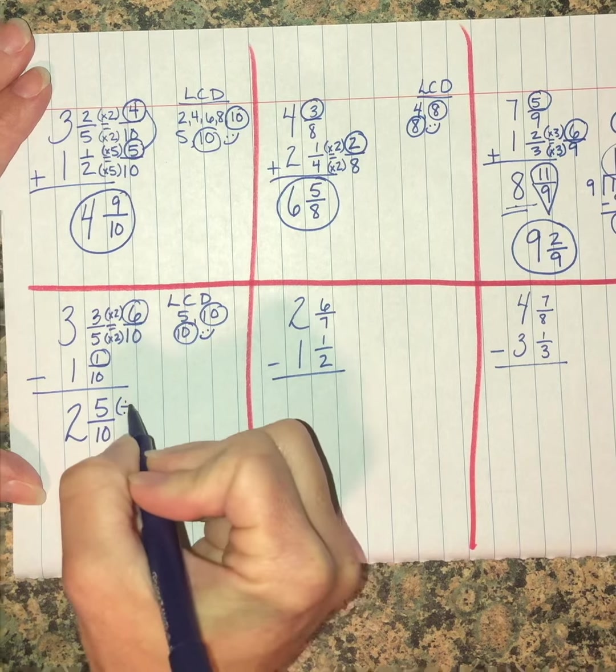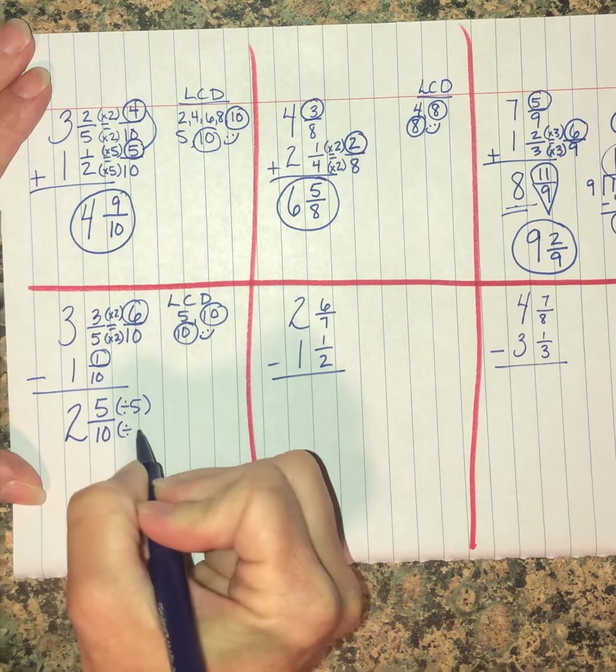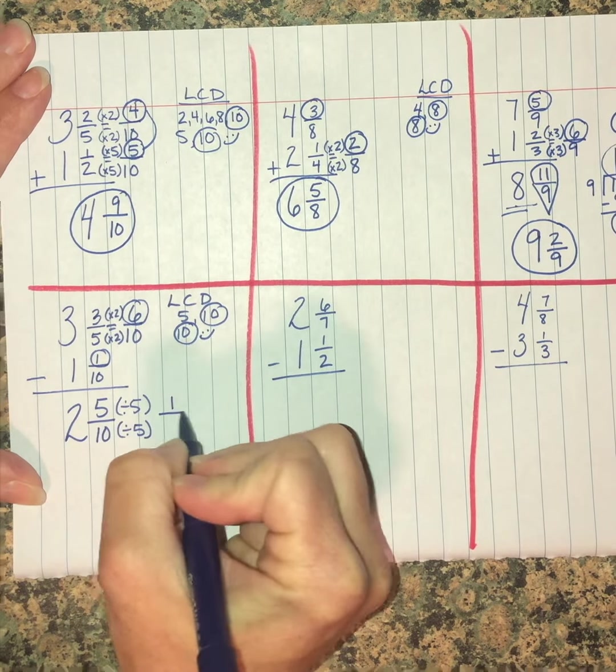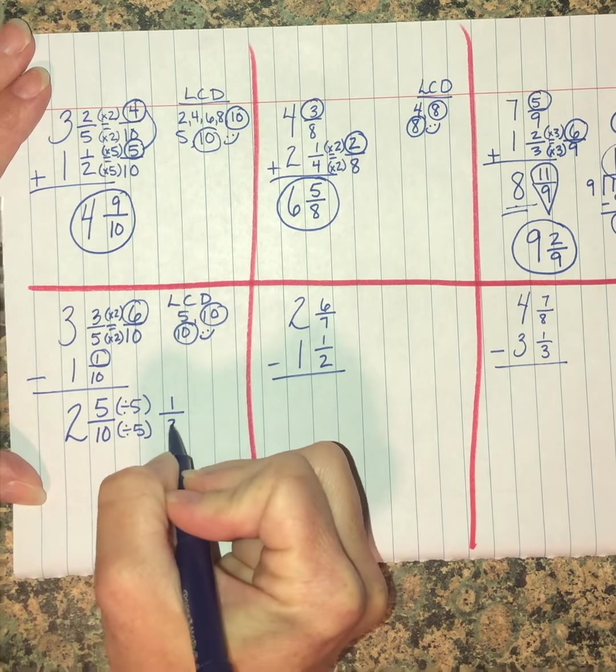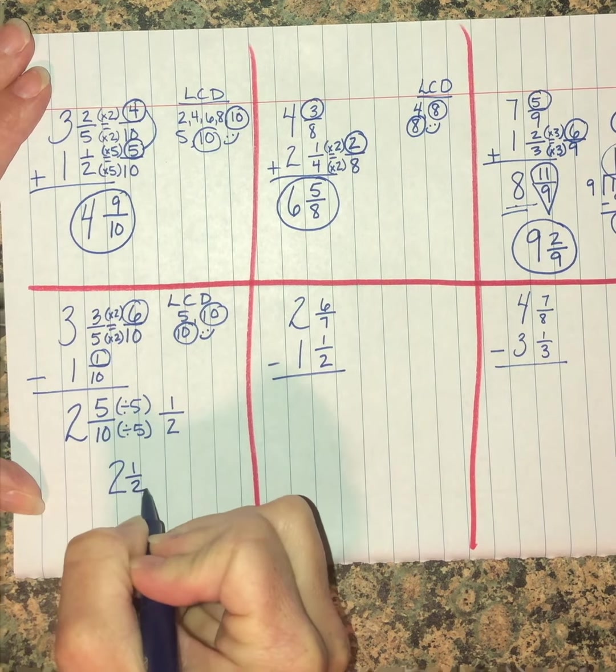But we're not done yet. Five-tenths: five is half of ten, this is equal to one-half. Some of you have been struggling with this. If you need to write this out this way, it's fine. Five divided by five is one, ten divided by five is two, and your answer is one and a half.